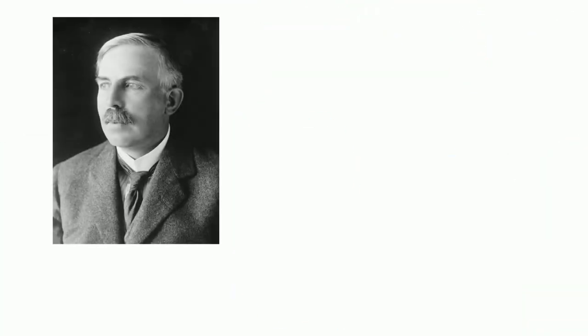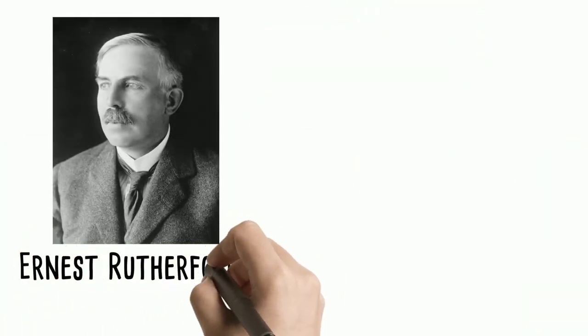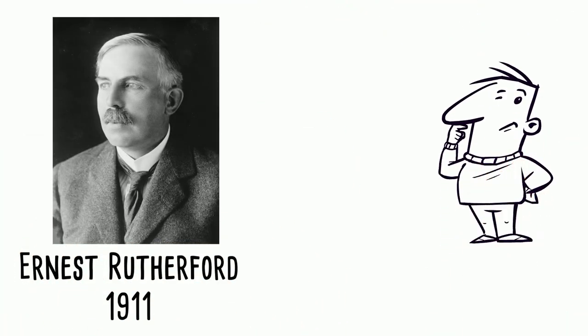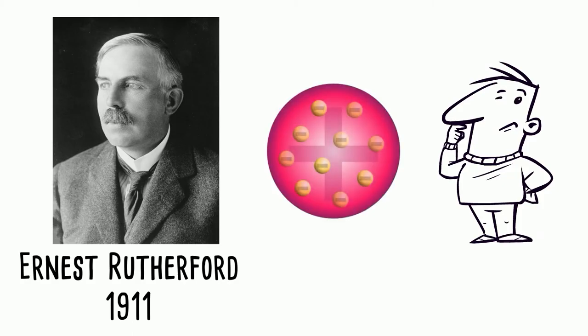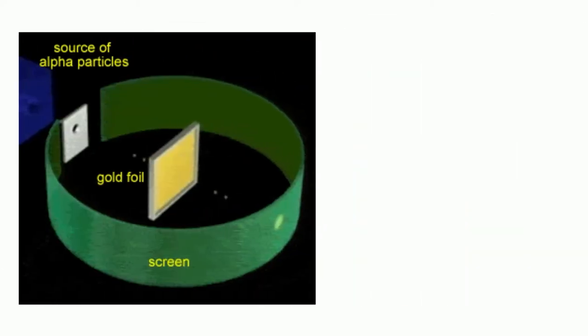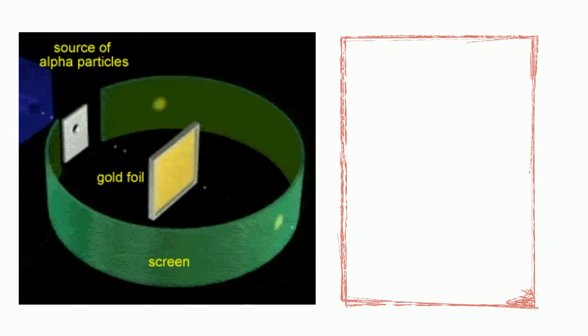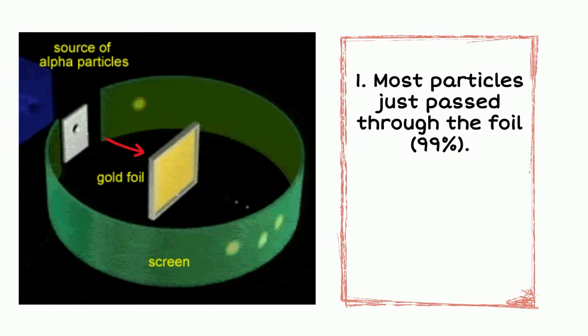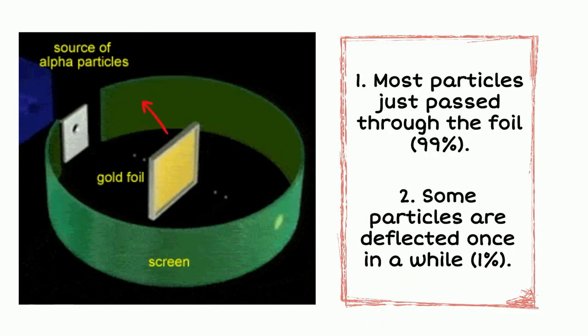This was revised in 1911 when Ernest Rutherford wondered about Thompson's model, so he used it in his experiment. In his gold foil experiment, he directed a beam of positive alpha particles to a thin piece of gold foil. From this, he obtained the following observations. Most particles just pass through the gold foil, and some particles are deflected once in a while.